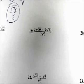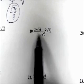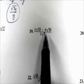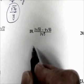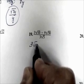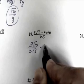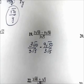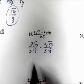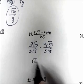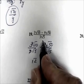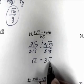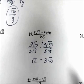Number 19. We have a binomial in the numerator and a monomial in the denominator. So we're going to divide each term of the numerator by 3 square root of 5. Let's break this up: 3 square root of 10 divided by 3 square root of 5, minus 9 square root of 50 divided by 3 square root of 5. The 3s divide out; square root of 10 divided by square root of 5 is square root of 2. Then 9 and 3 reduce, and square root of 50 divided by square root of 5 is square root of 10. Square root of 10 cannot be simplified, so this is our final answer.